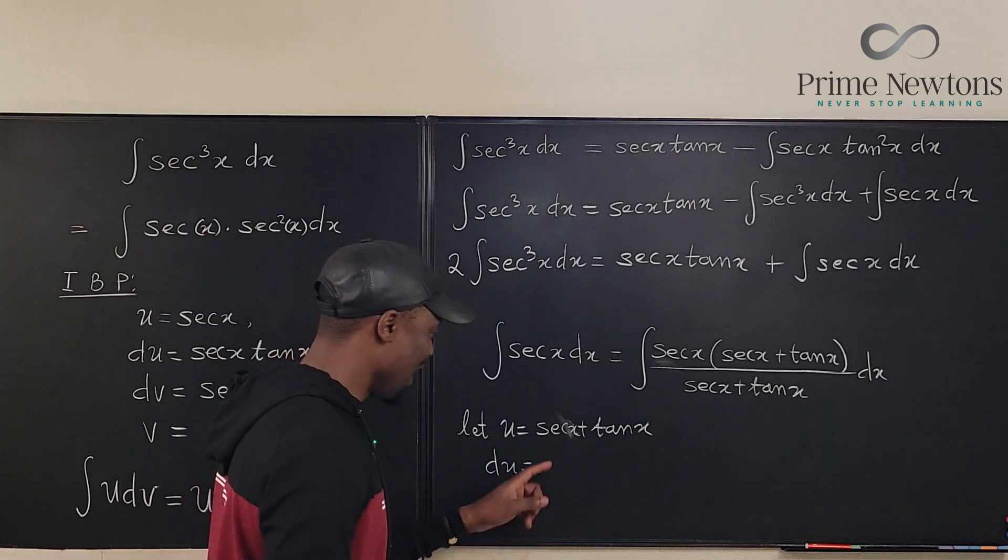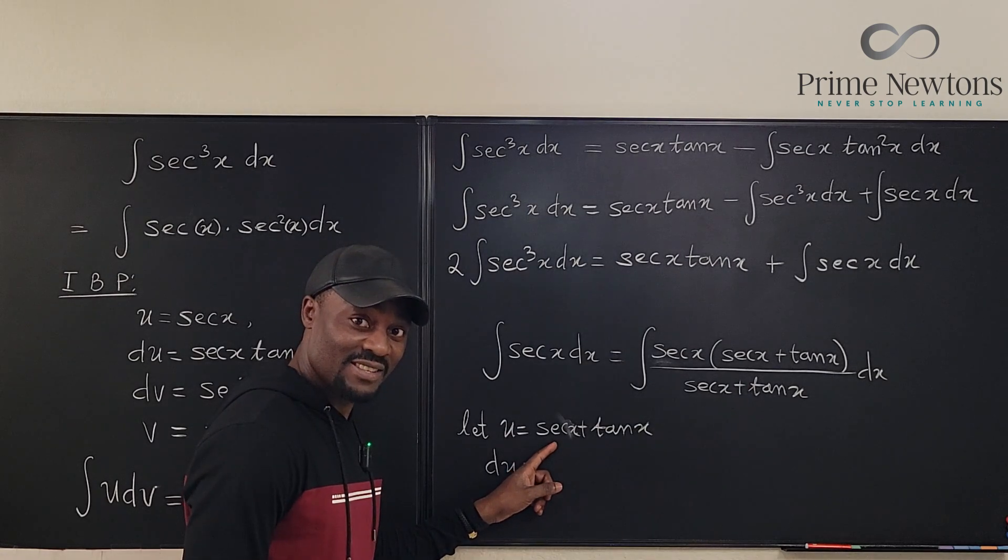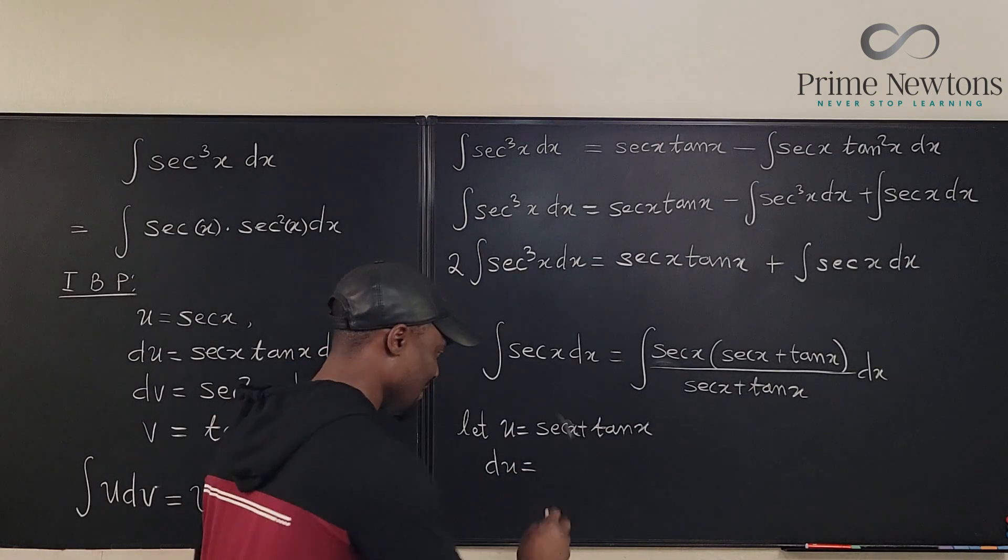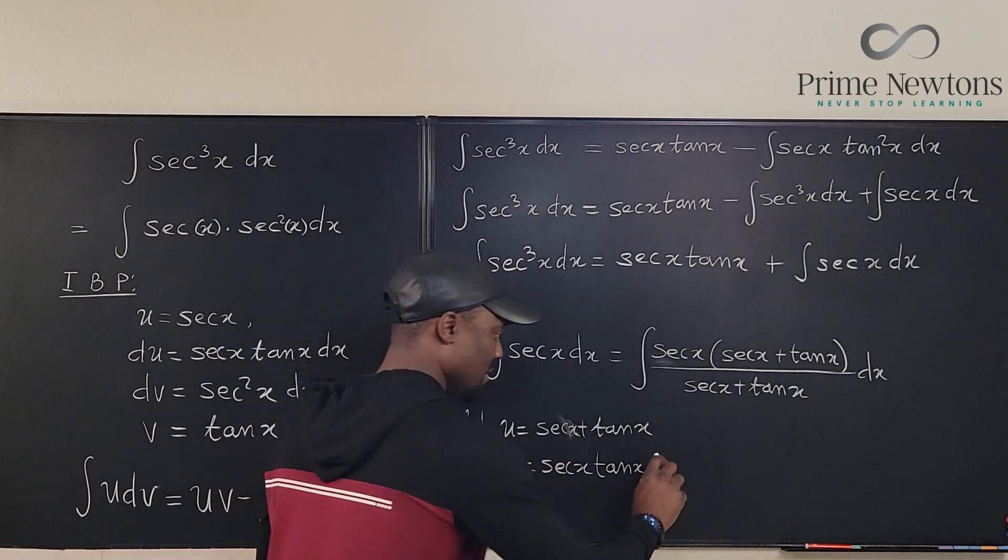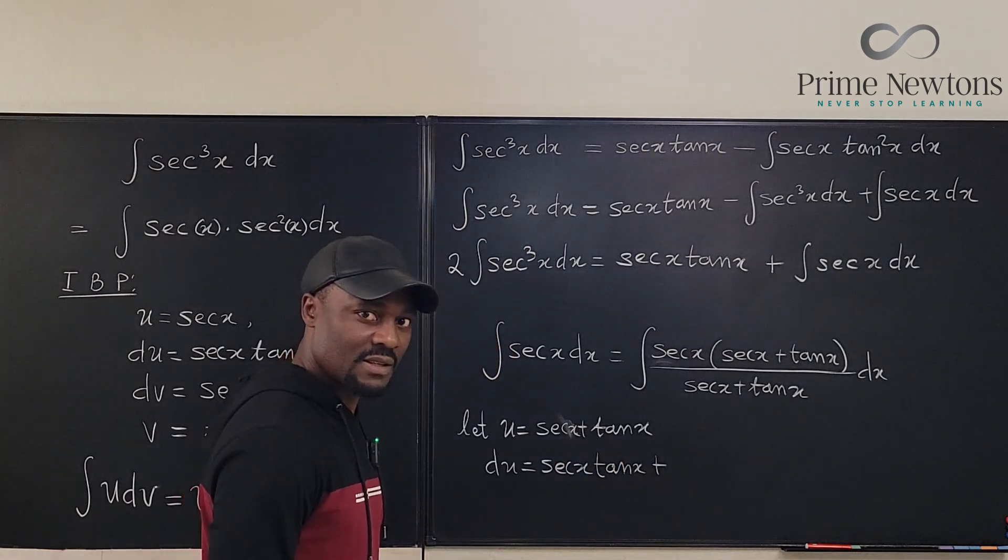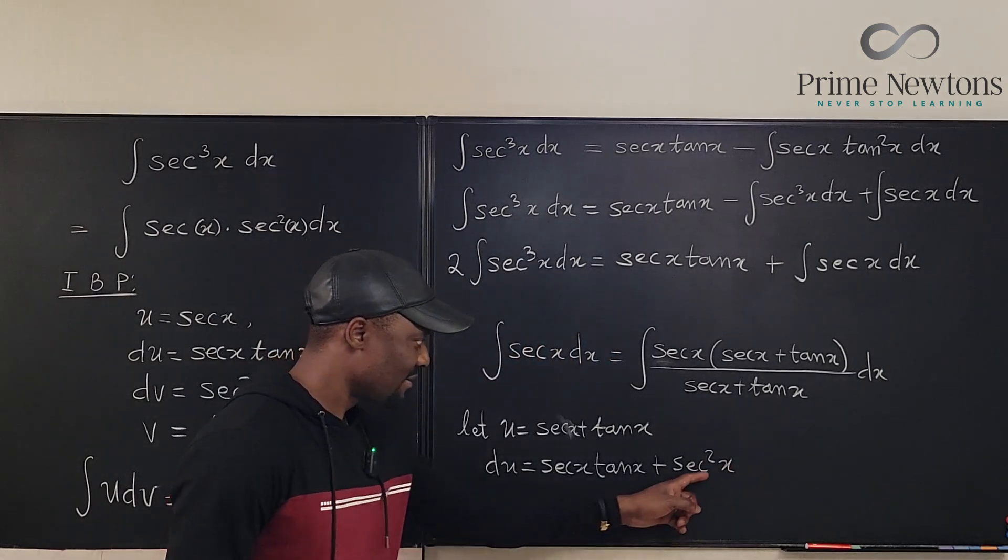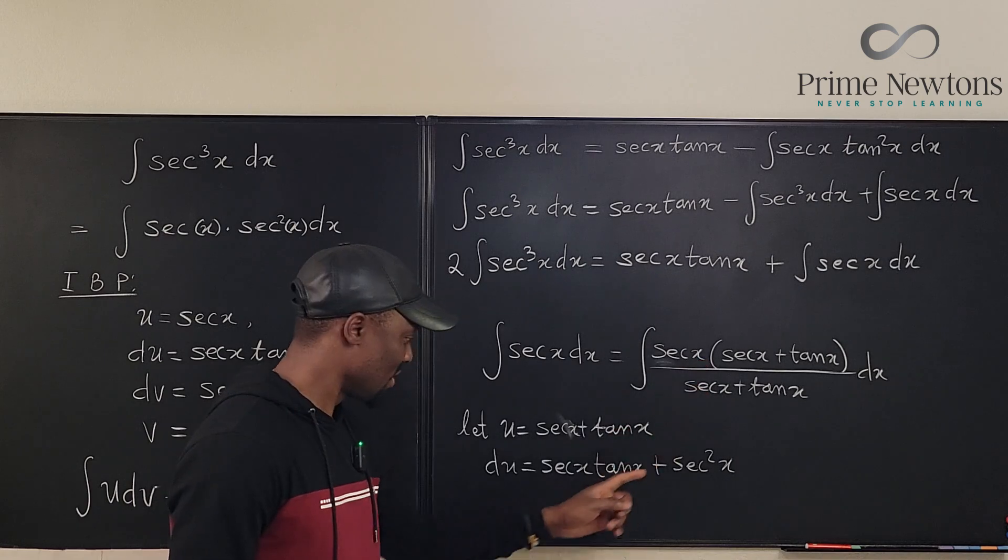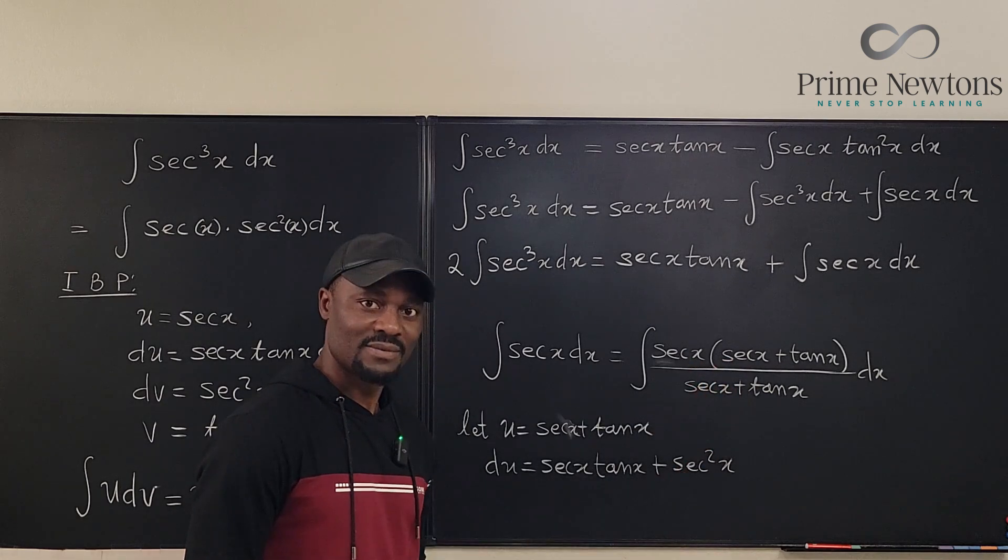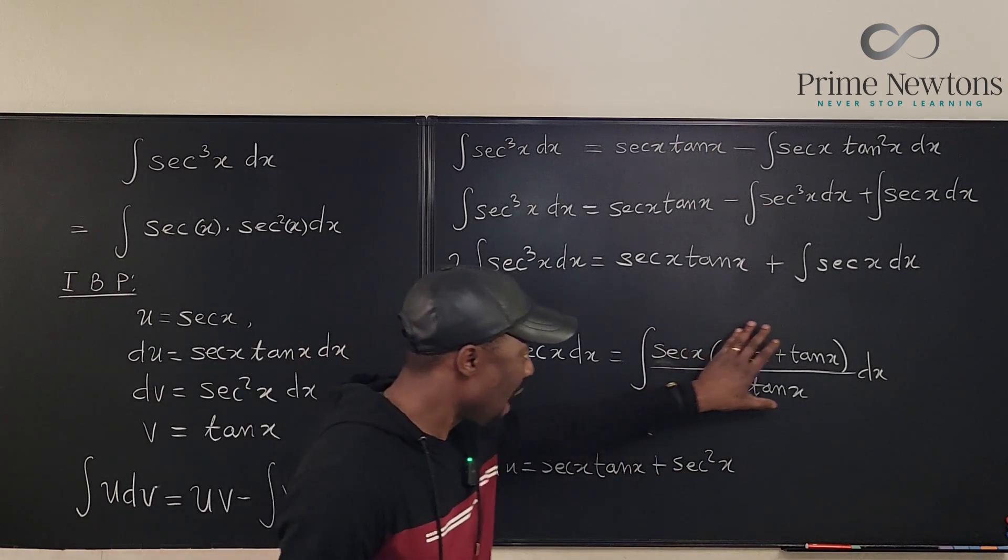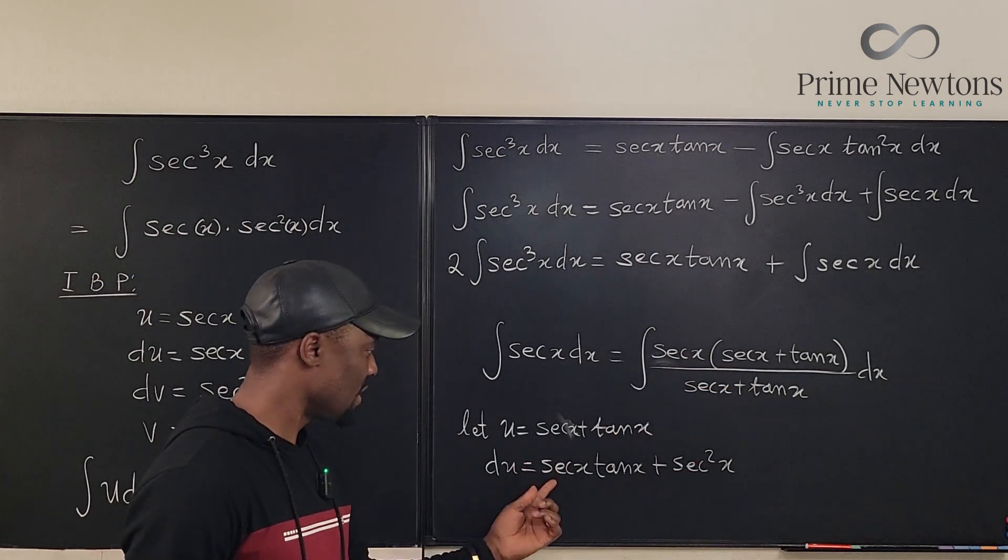The derivative of secant x is secant x tan x. So it's going to be secant x plus tan x plus tan x. What's the derivative of tan x? It's secant squared x. Secant x. But that's exactly what's on top here. It is secant tan, secant tan, and secant squared. So you can actually rewrite all of this expression as du over u if this is your u.